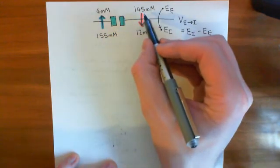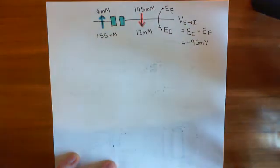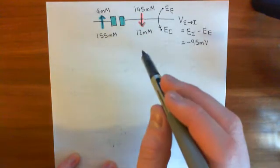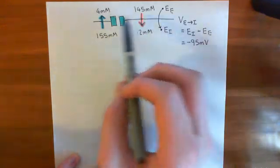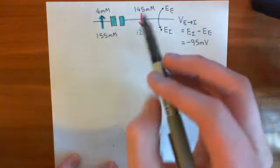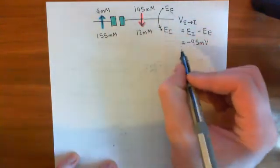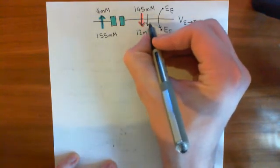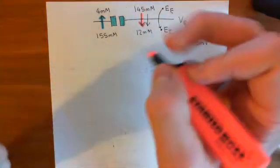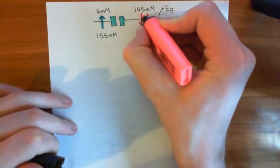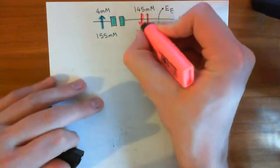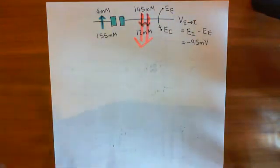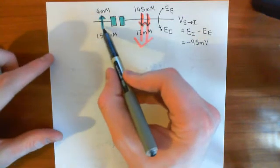Sodium ions and potassium ions both have a positive charge, so they want to be in the place where the electrical potential is lower, and the electrical potential is lower in the intracellular compartment. So basically, the electrical potential gradient across this membrane is going to favour the movement of sodium in — it's going to help the concentration gradient and hugely increase the movement of sodium in. So this arrow should be getting absolutely massive, hugely potentiated by the electrical gradient across the membrane.